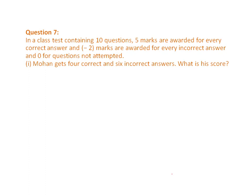Question number 7. This question has three parts and for all parts the instructions are the same. In a class test containing 10 questions: 5 marks for a correct answer, minus 2 for an incorrect answer, and 0 for not attempted. First case: Mohan gets 4 correct and 6 incorrect. For correct answers, you are awarded 5 marks each.